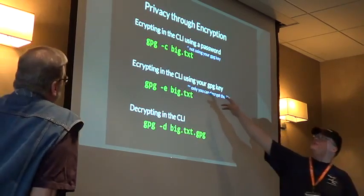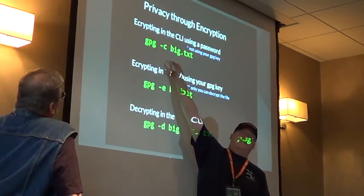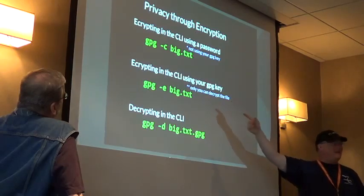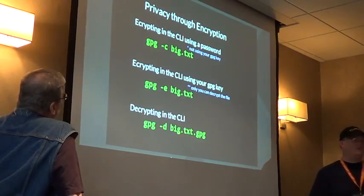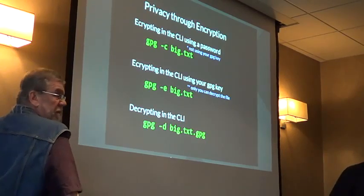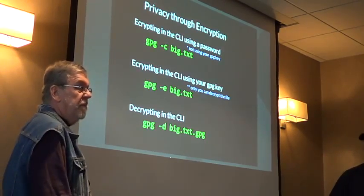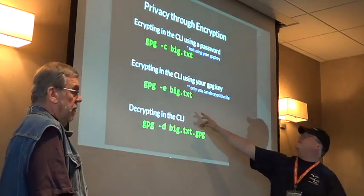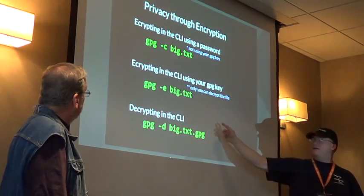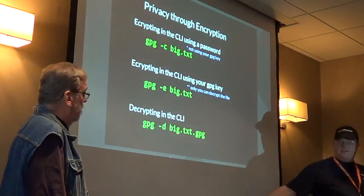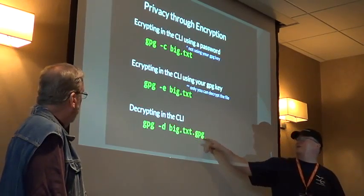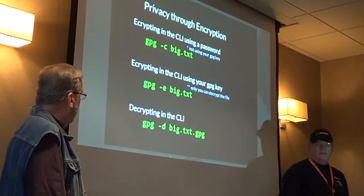If you use GPG with the dash C flag, it uses a passphrase to encrypt the file rather than your key - you give the person the passphrase and they can decrypt it. If you use dash E, it encrypts for you and only you can decrypt it with your private key. When you encrypt, it creates another file with a .gpg extension - note that the original file is still there; you have to delete it manually.